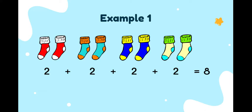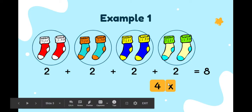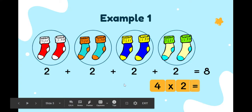Now we make the multiplication sentence. Remember, students, to make a multiplication sentence, we have to count and write the group first. Let's count: one, two, three, four. So we have four groups and we write four. Times — this is the symbol of multiplication, and we read it as times. Times two. Why two? Because each group has two socks. Is equal to eight. This is the multiplication sentence: four times two is equal to eight.